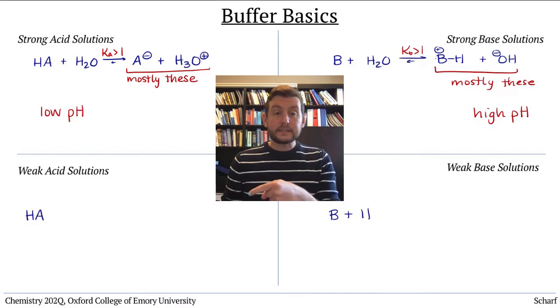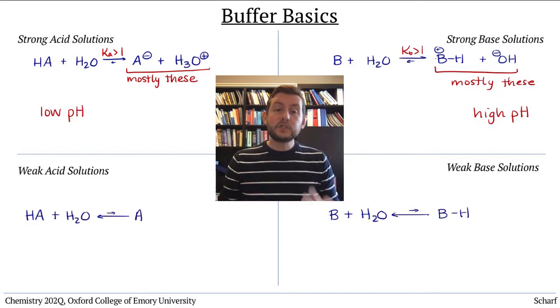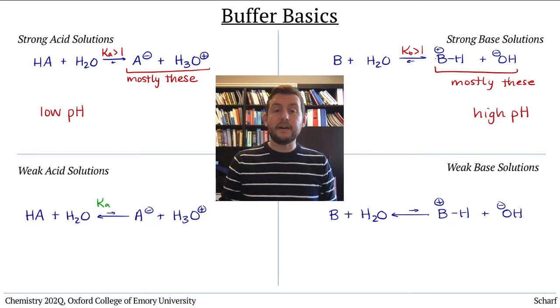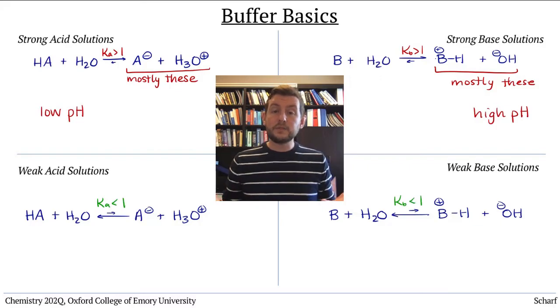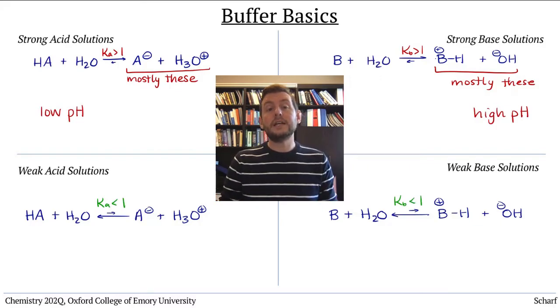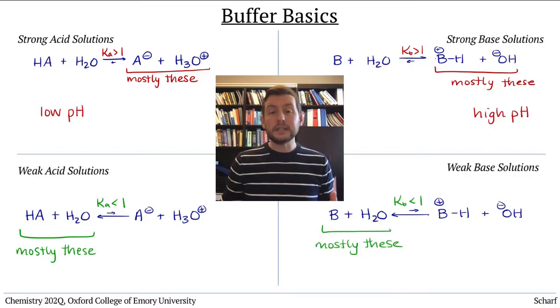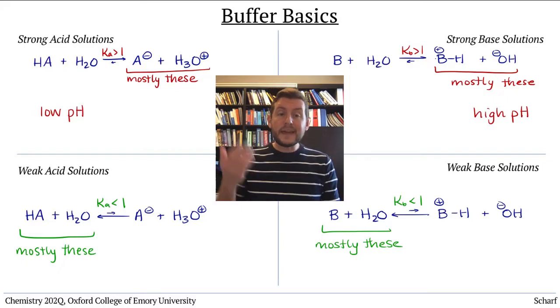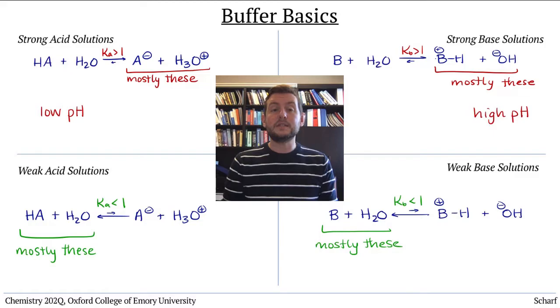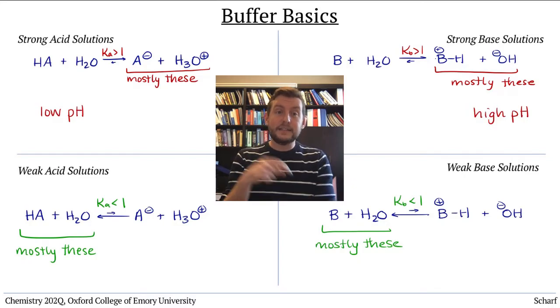Weak acids and bases have smaller Ka and Kb values, so when dissolved in water, the solution contains primarily the original weak acid or weak base and very little of its conjugate. We say that the major species in these solutions are the ones in highest concentration, here the weak acid and base themselves.